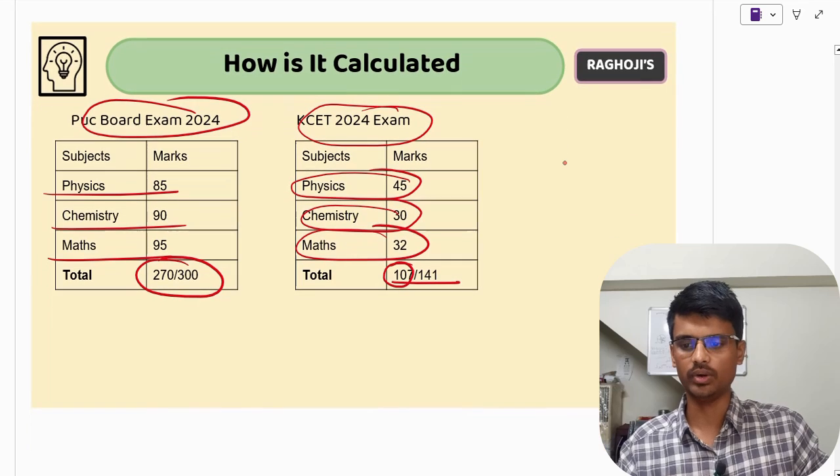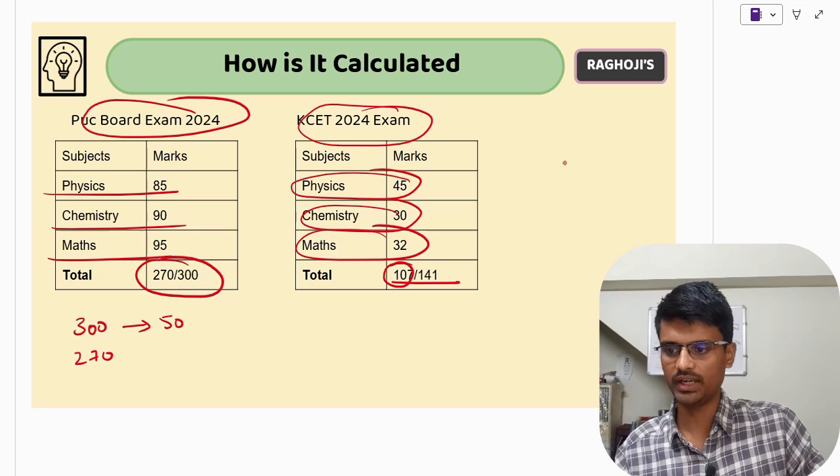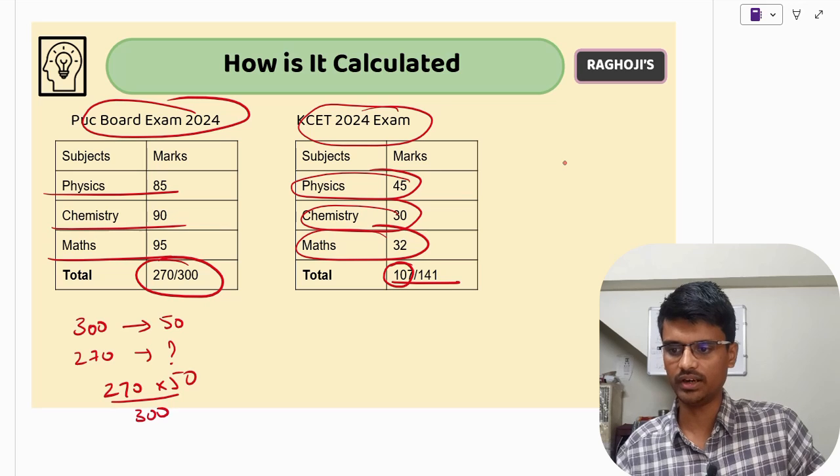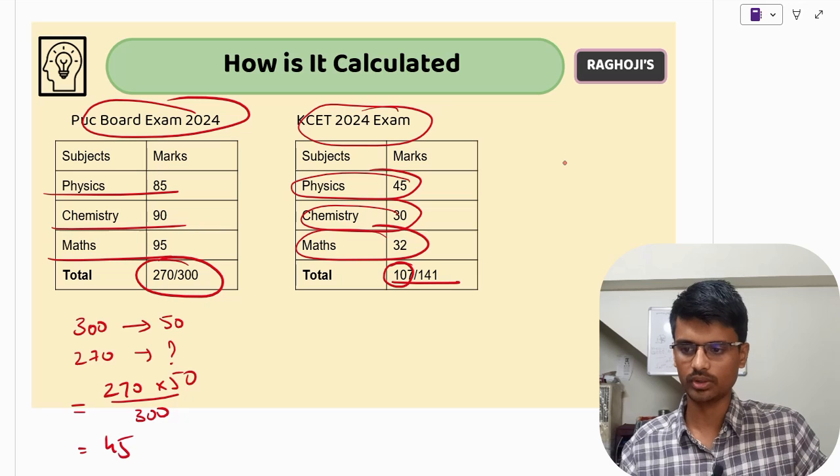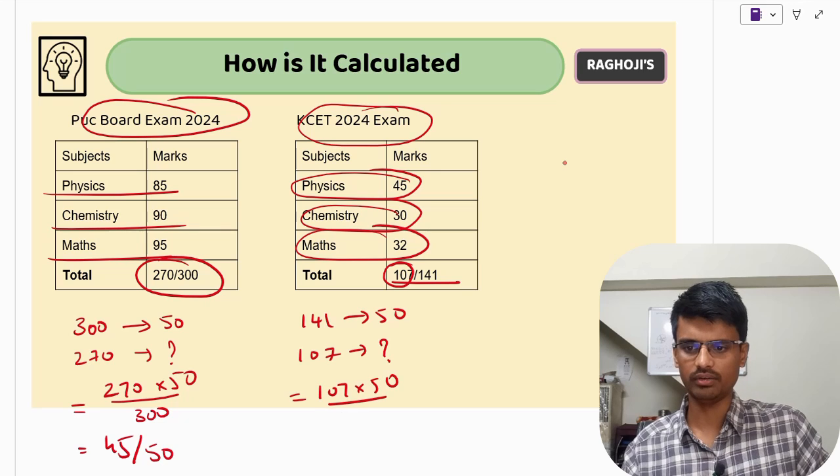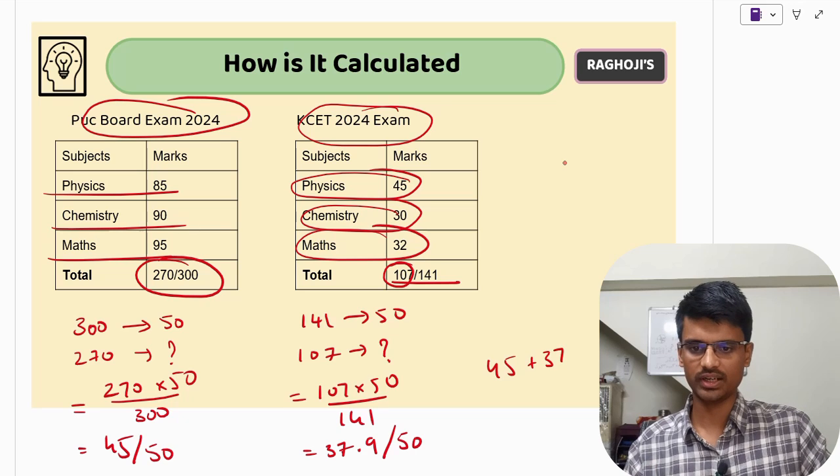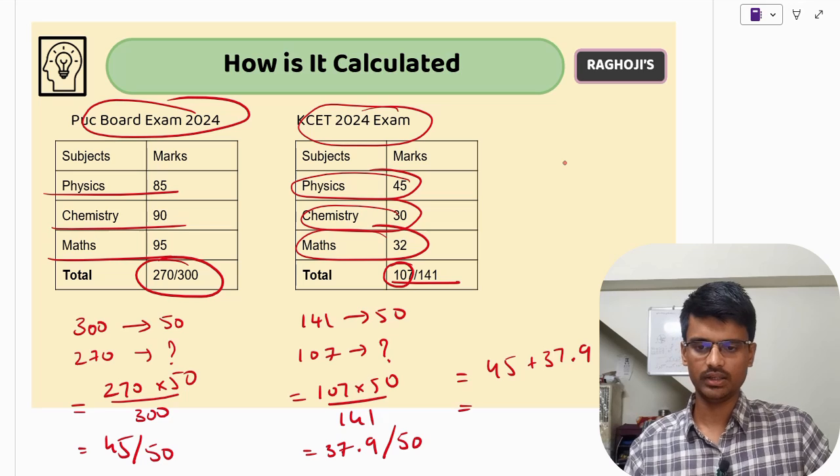Go to KEA website and there is a section in admissions called KCET. Go refer that website, whatever all the latest updates you will find in the website. Every day, maybe you can check the website once so that you don't miss out any updates. The thing I am trying to tell is, don't blindly follow YouTube videos. That is a wrong habit. Always do your own work also. Go and check the official website.